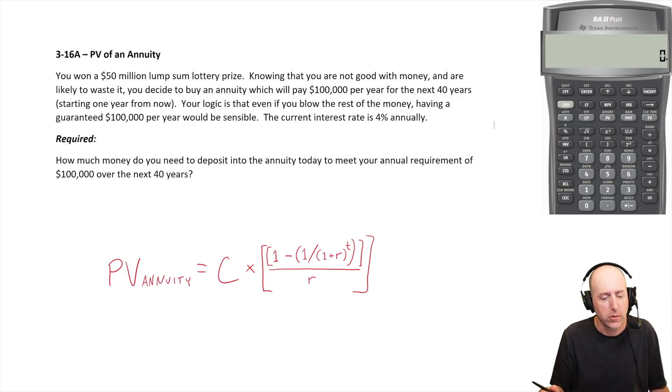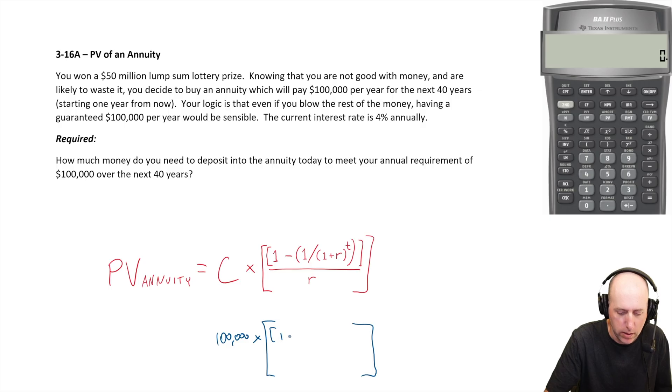We see the formula. Present value of an annuity equals the recurring cash flow, which in this case is $100,000, times this big bracketed mathematical thing: 1 minus 1 over 1 plus the required rate of return, or the interest rate in this case, 4%.